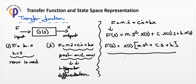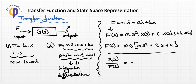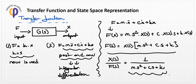The transfer function means: if we apply a unit force to this system, what is the position output x? The main difference is that this equation is time-dependent, but in transfer function form we do not involve time representation — only the frequency domain. So we write it as 1 divided by (m*s² + c*s + k), and this is called the transfer function of the system.